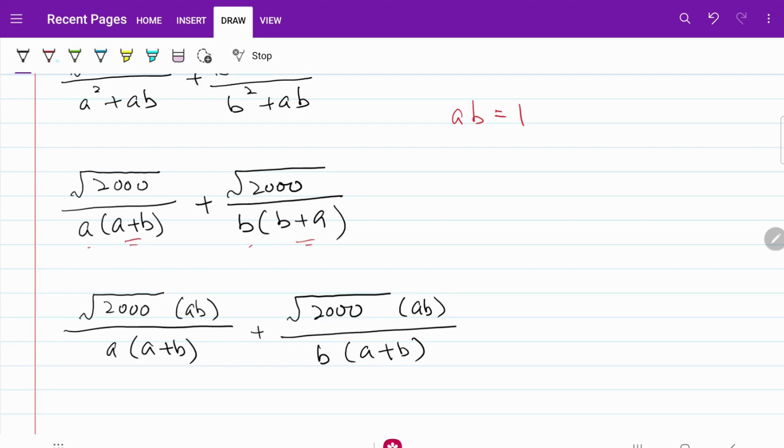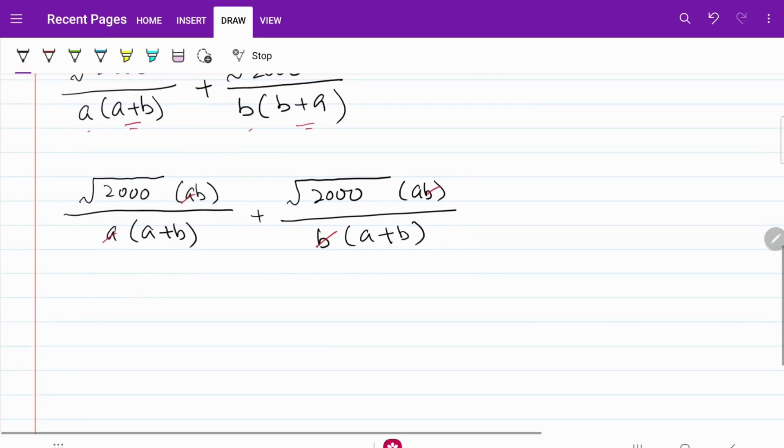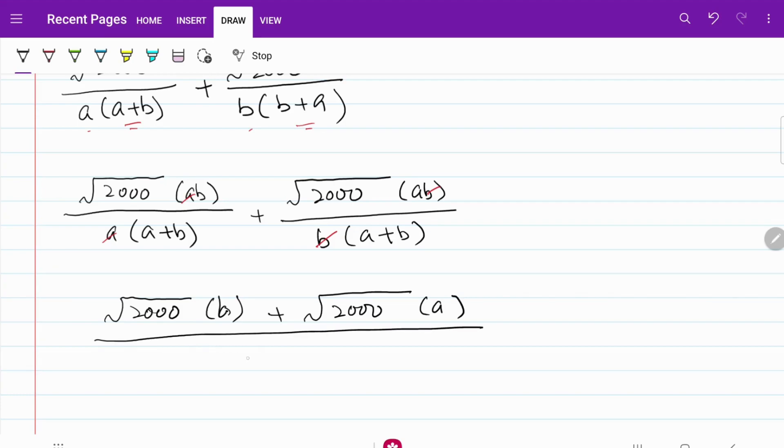If I can do that, then I can cancel out a with a, b with b. So what I end up with now looks like this. I have square root of 2000 multiplied by b plus square root of 2000 multiplied by a over the common denominator of a plus b.